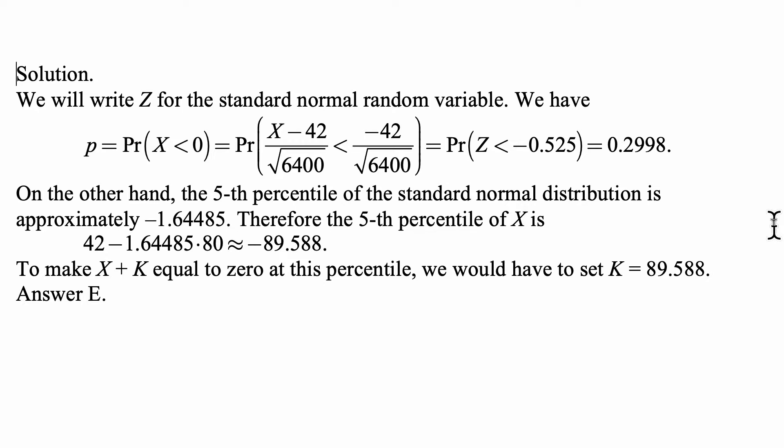On the other hand, the fifth percentile of the standard normal distribution is approximately negative 1.64485. Therefore, the fifth percentile of X is the mean minus that fifth percentile times the standard deviation, which is the square root of 6400, so 80. And that's approximately negative 89.588.